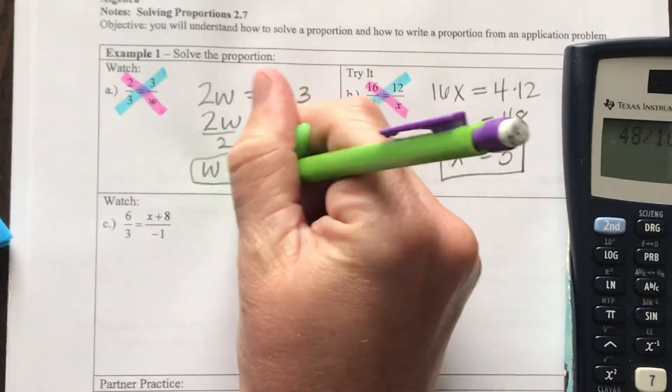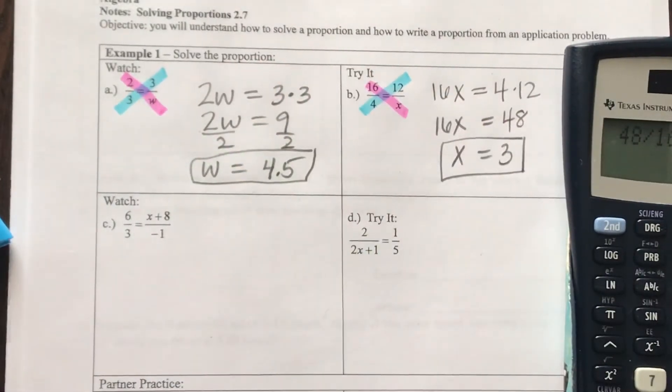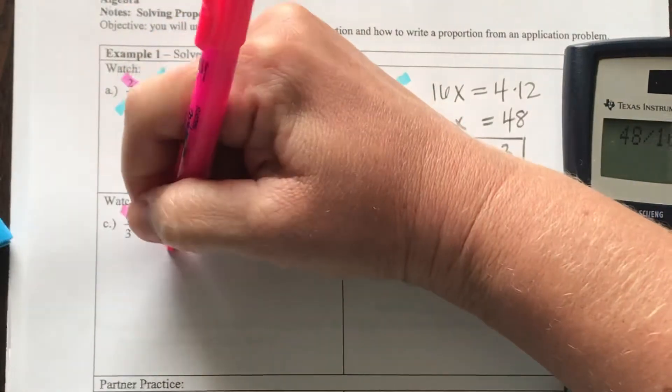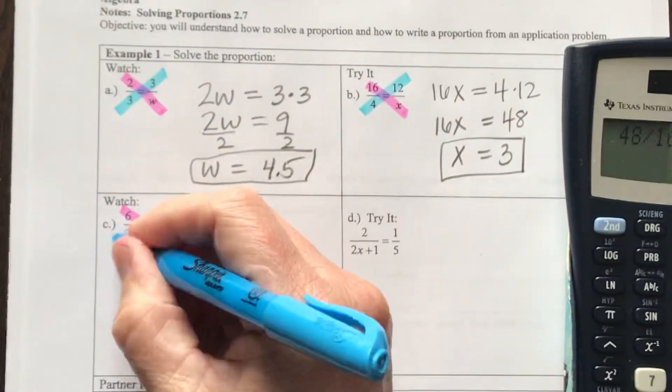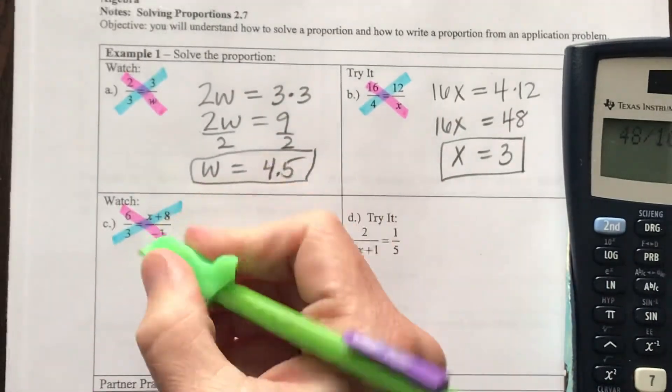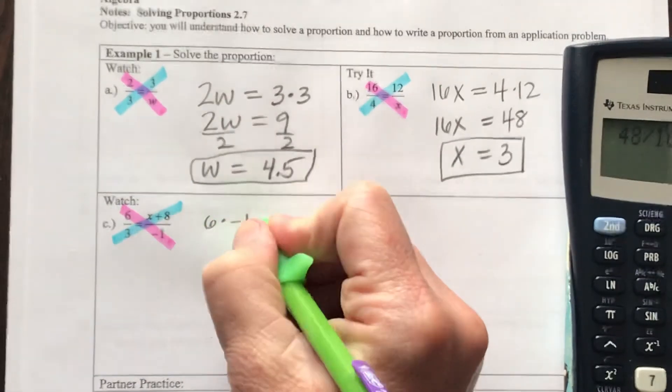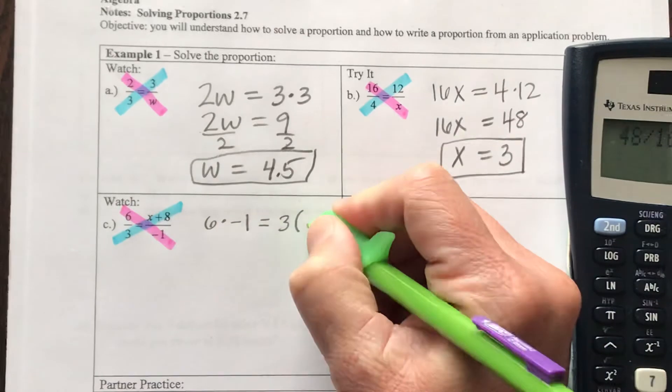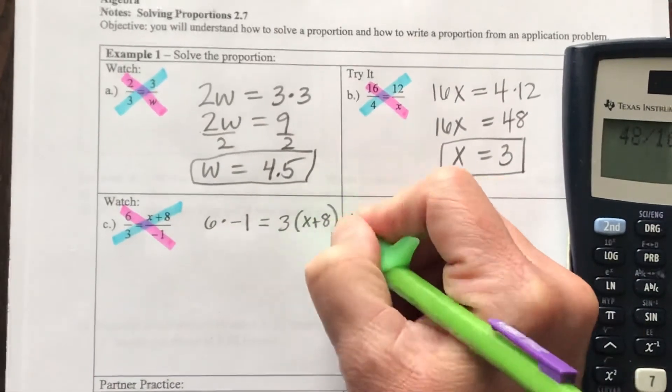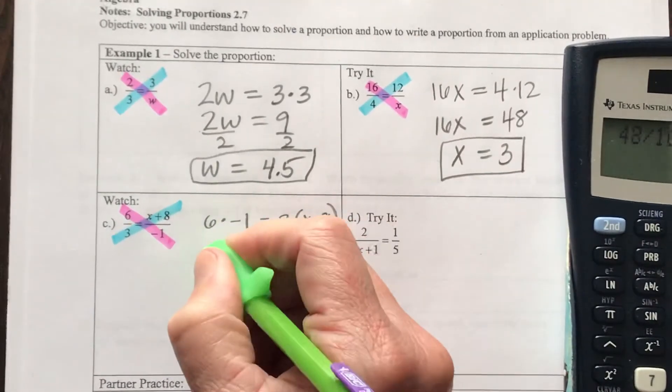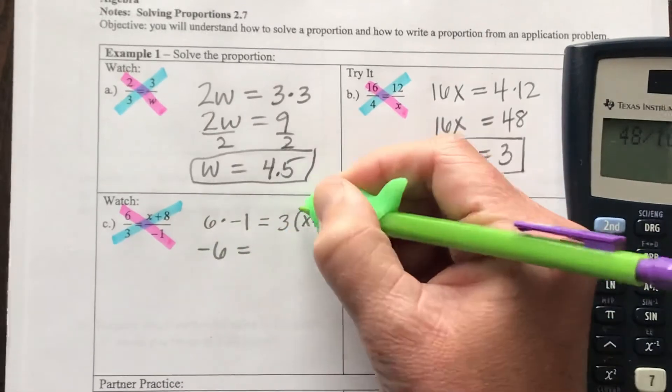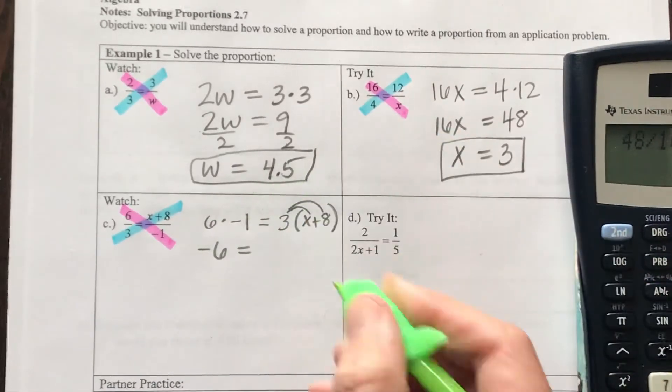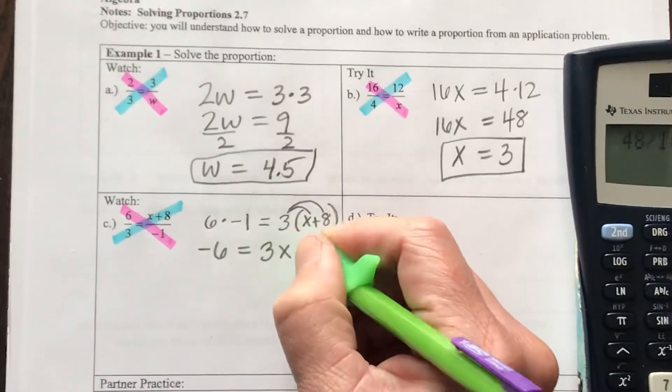Now watch when we have something a little bit more complicated. So my diagonals multiply together. I'm going to have 6 times negative 1, and that will equal 3 times the group X plus 8. 6 times negative 1 is negative 6. And if I distribute my 3, I'm going to have 3X plus 24.